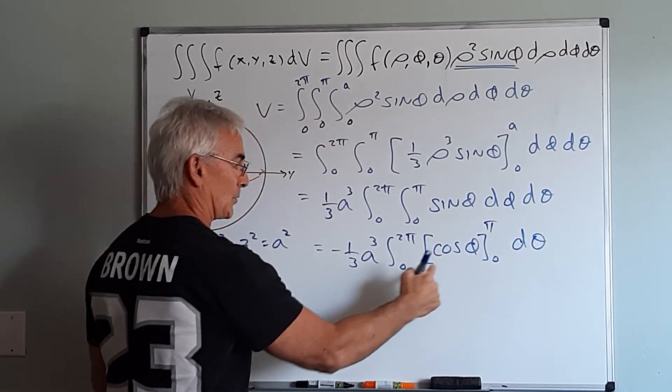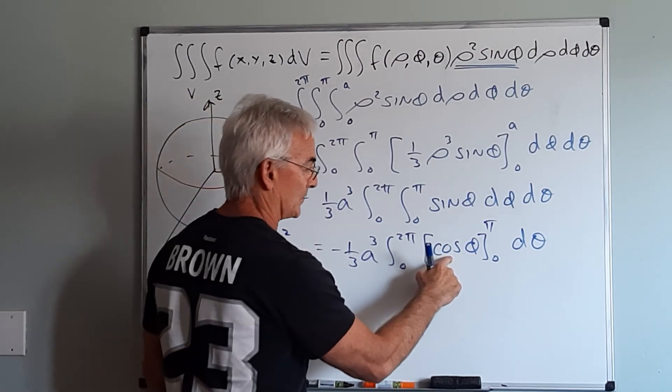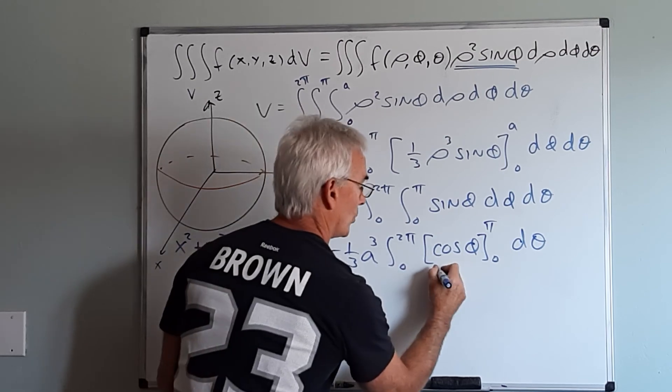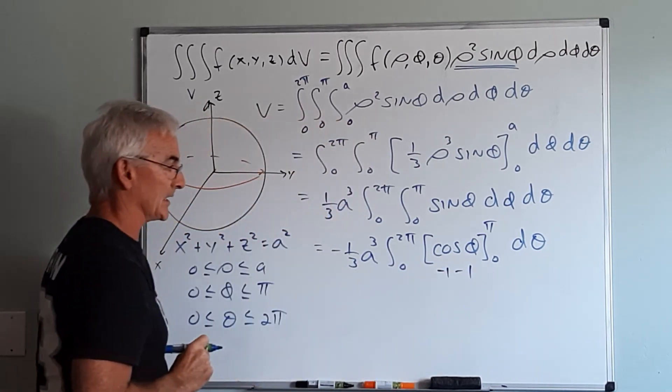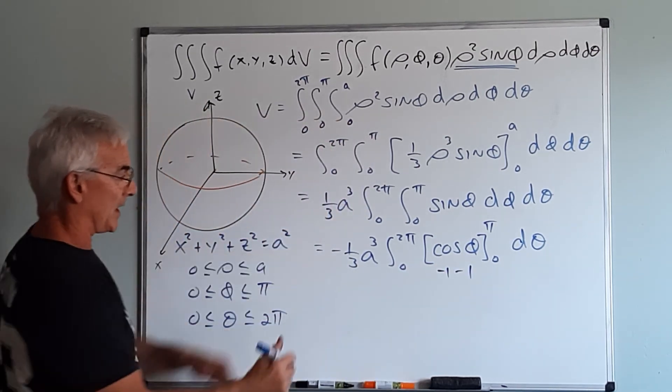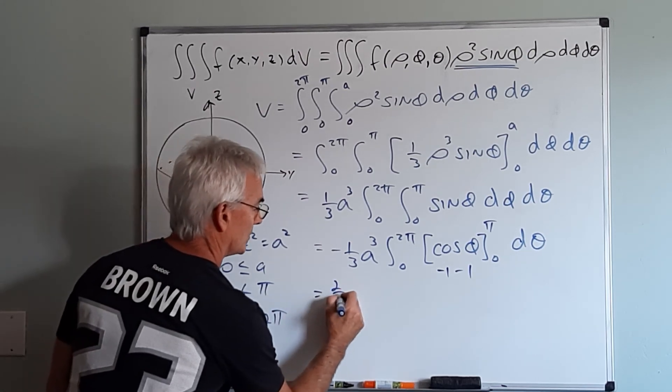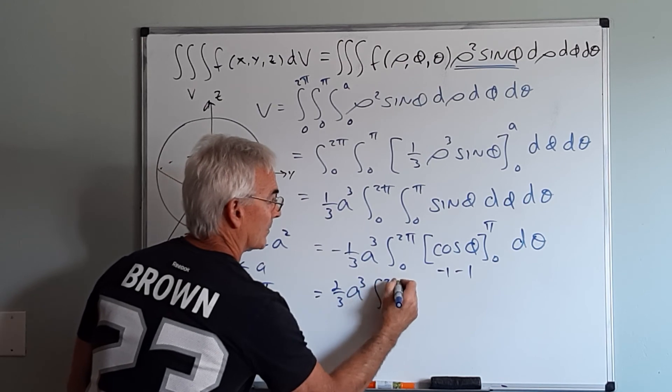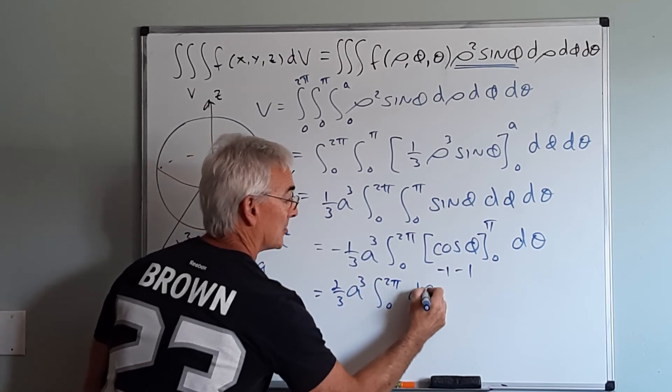Now as I evaluate that, the cosine of pi is negative 1, the cosine of 0 is 1, so this will be negative 1 minus 1, which is this negative 2, but when I multiply it by here, that makes this positive 2 thirds A cubed, from 0 to 2 pi, d theta.